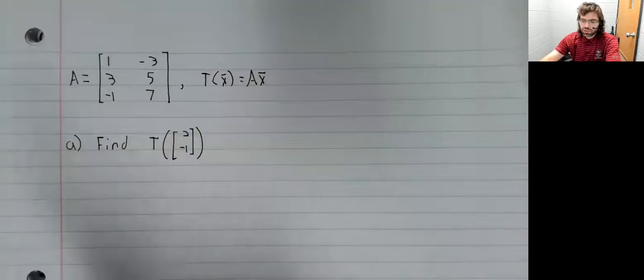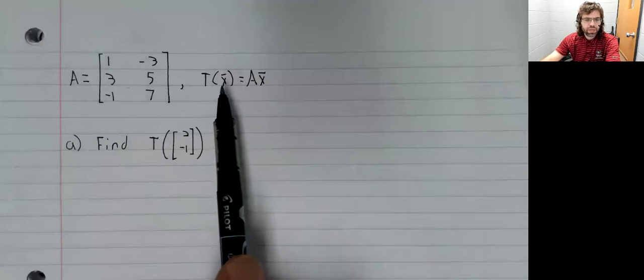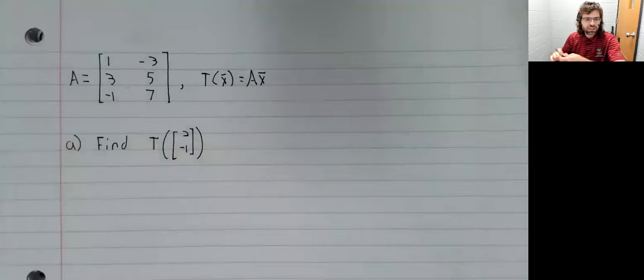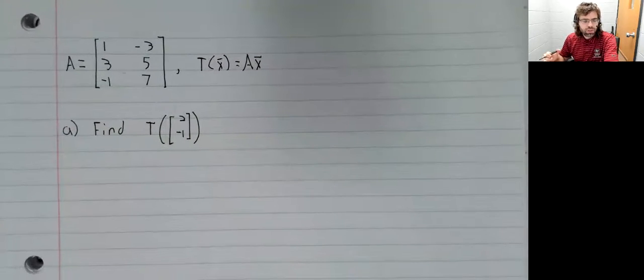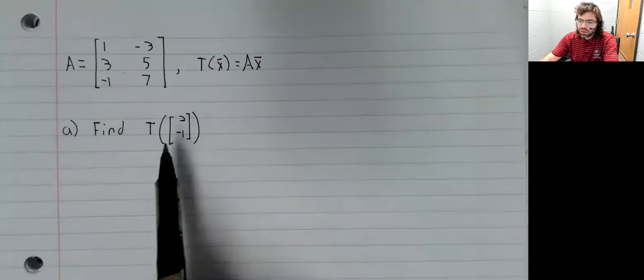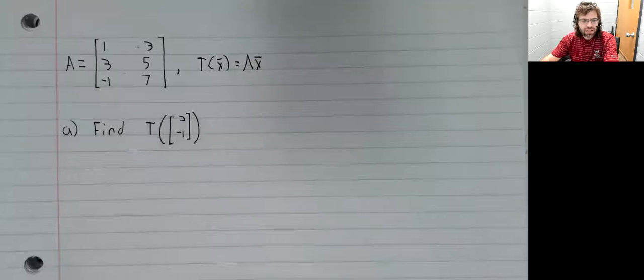We'll use a matrix A to define a transformation t(x) = Ax. Let's start with a simple example to clarify what this transformation is doing by finding the image of a vector.